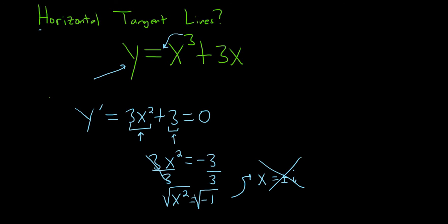So that means there are no horizontal tangent lines. So there are no points. So the answer would be none. There are no points where this function has a horizontal tangent line.